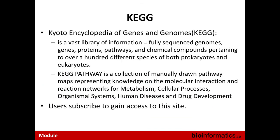KEGG — the Kyoto Encyclopedia of Genes and Genomes — is based in Kyoto, Japan. It's a very large database that includes genome sequences, protein databases, chemical compound databases, and spans multiple prokaryotes and eukaryotes. The pathway portion consists of manually drawn pathway maps created by expert curators. It used to be a free resource, but due to public funding issues it has moved to a subscriber model — you have access to part of it for free, but must pay a license fee to download more.